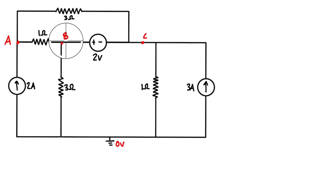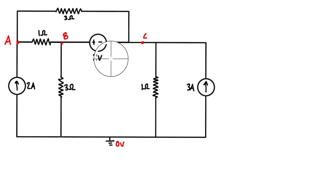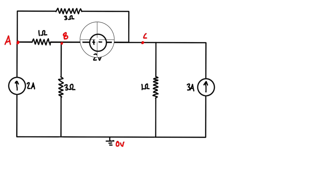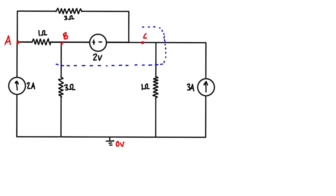In this problem we want to connect nodes B and C into one big supernode because there's a voltage source between them — that's what we look for in supernode problems. Let's draw the supernode boundary here; it includes all of B and all of C. You don't have to draw the border around every piece of the node as long as it's clear.